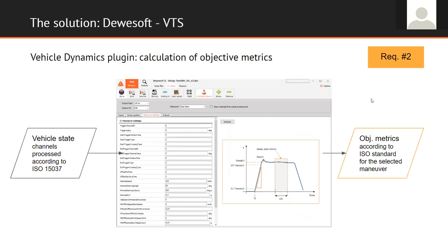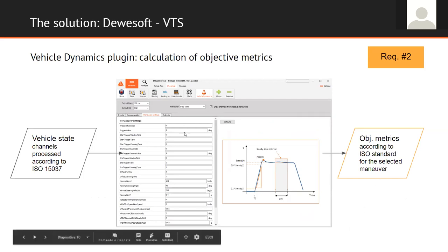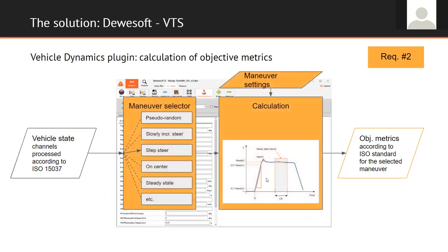The second step is to calculate the objective matrix in order to validate each test manoeuvre. The plugin includes a manoeuvre selector — the plugin must know what manoeuvre we are going to perform, for example a step steer. Based on manoeuvre settings, the plugin makes the calculation of objective matrix, which can be a steady state value of some quantities, the application rate of steering wheel angle, the rate of lateral acceleration or yaw rate in the transient, and so on. At the end of the process, we have channels in Devisoft containing the objective matrix that can be used for validation.